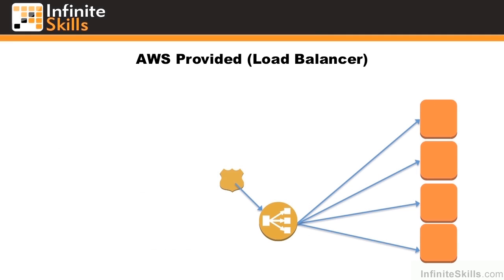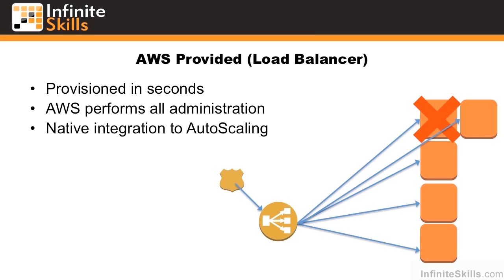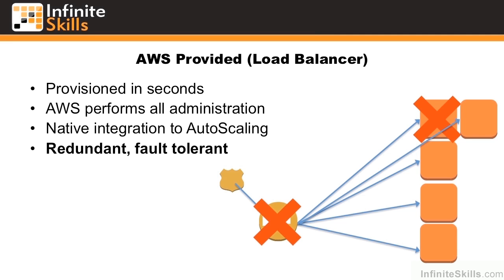If you look at an AWS-provided load balancer through the ELB function, you get provisioning in seconds or minutes. AWS performs all the administration, taking care of the HA in the backend so that it doesn't fail on you. It has native integration with autoscaling so that when you lose a server behind the ELB, another server spins up automatically. It's also redundant and fault-tolerant — what they actually do is run several ELBs at any given time, so that if you lose a single one, you don't lose your whole load balancing function.